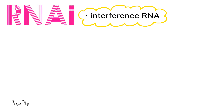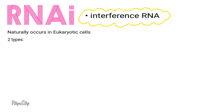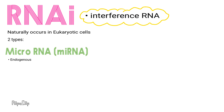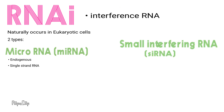RNAi stands for RNA interference and naturally occurs in eukaryotic cells. There are two types: microRNA, which is endogenous and comes from a single strand of RNA, and small interfering RNA, which is exogenous and comes from a double-stranded RNA.